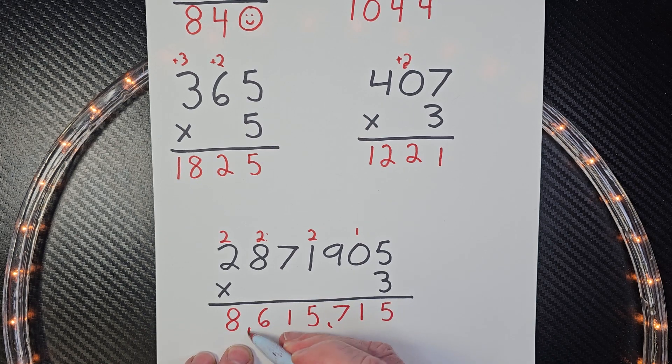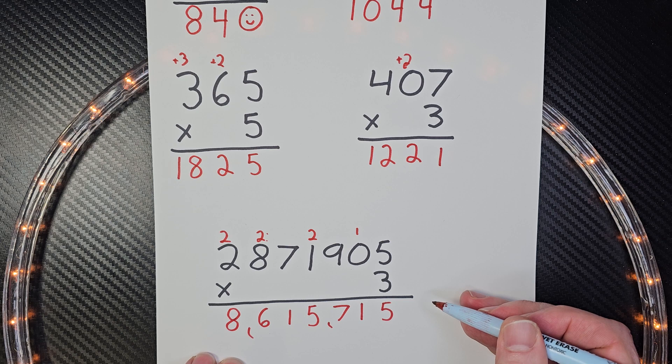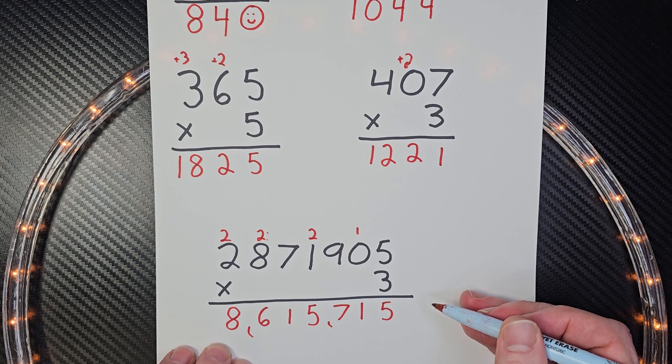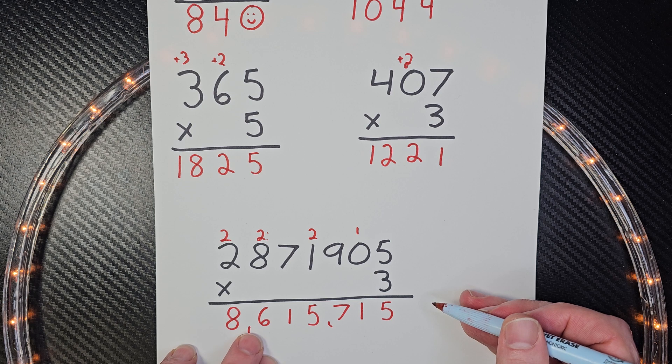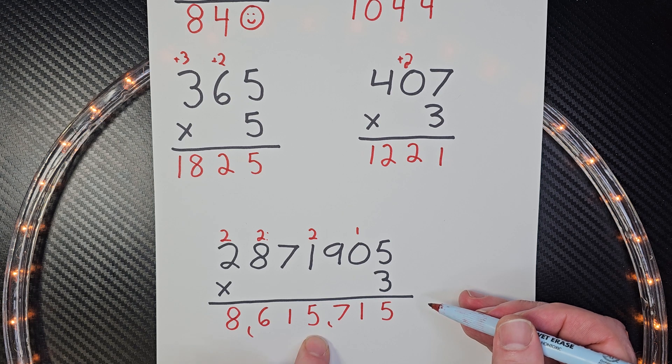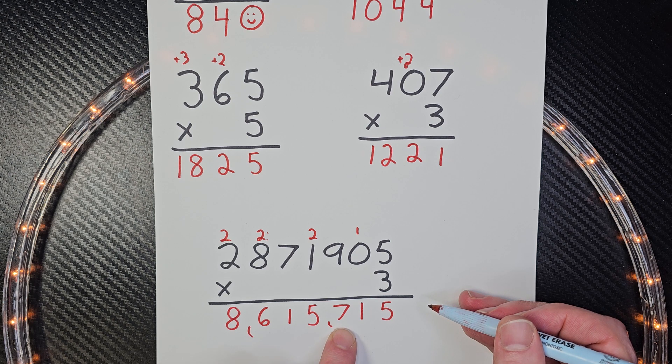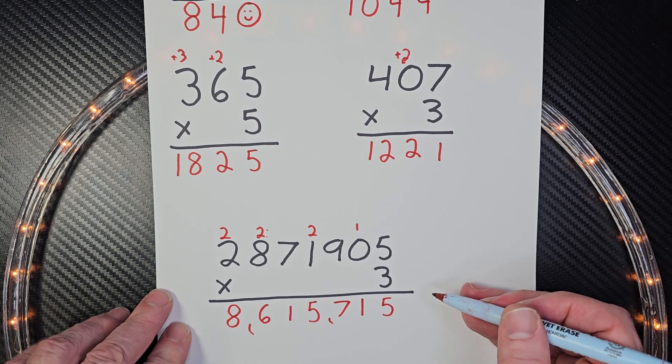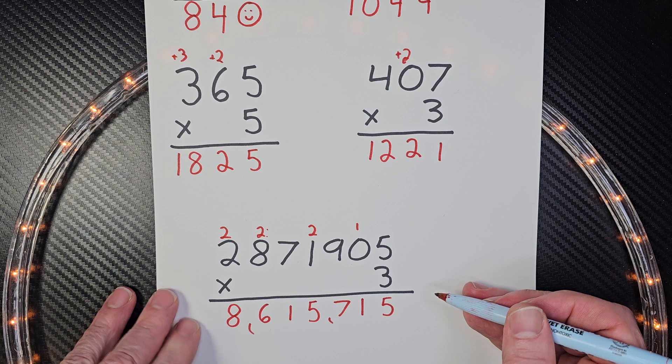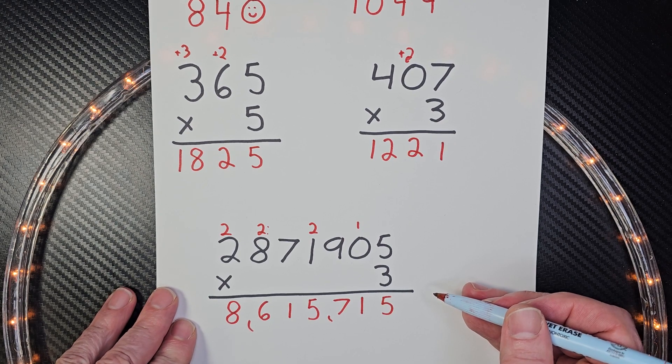I'll put a couple commas in here to see what this number is. That is a big number. How do you say a number like that? 8,615,715. Wow. I wish I had that many cookies. I probably would get a tummy ache if I tried to eat that many cookies.